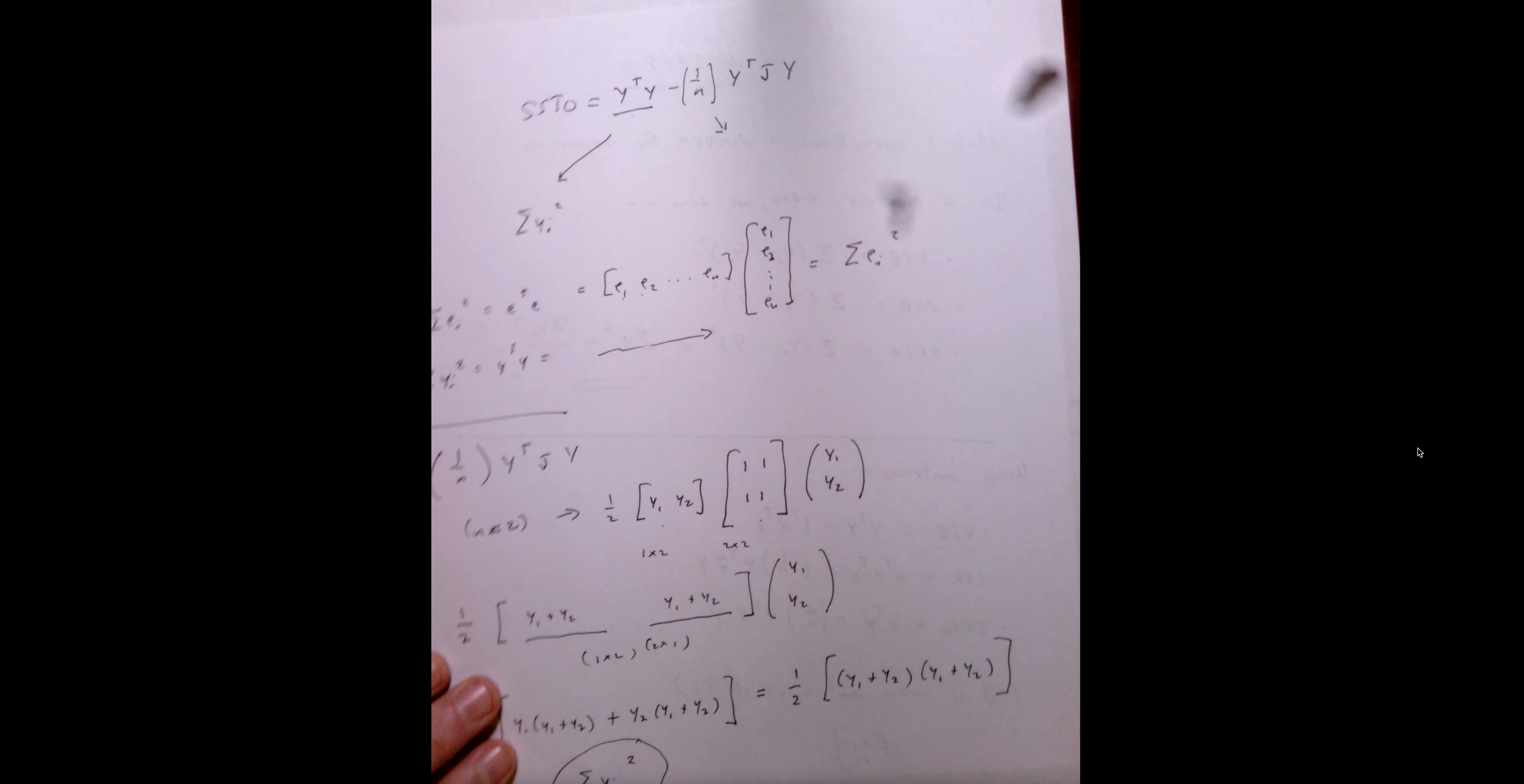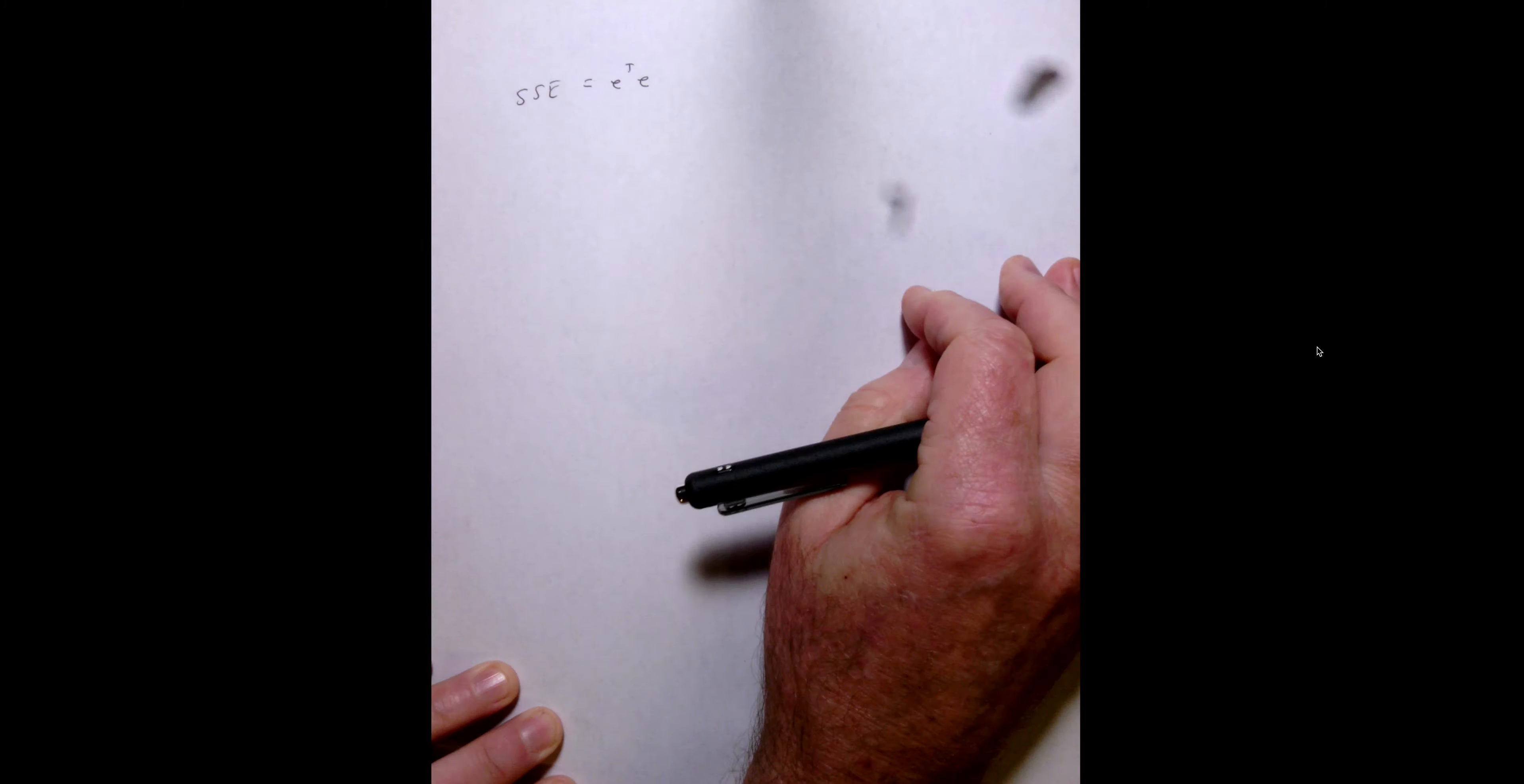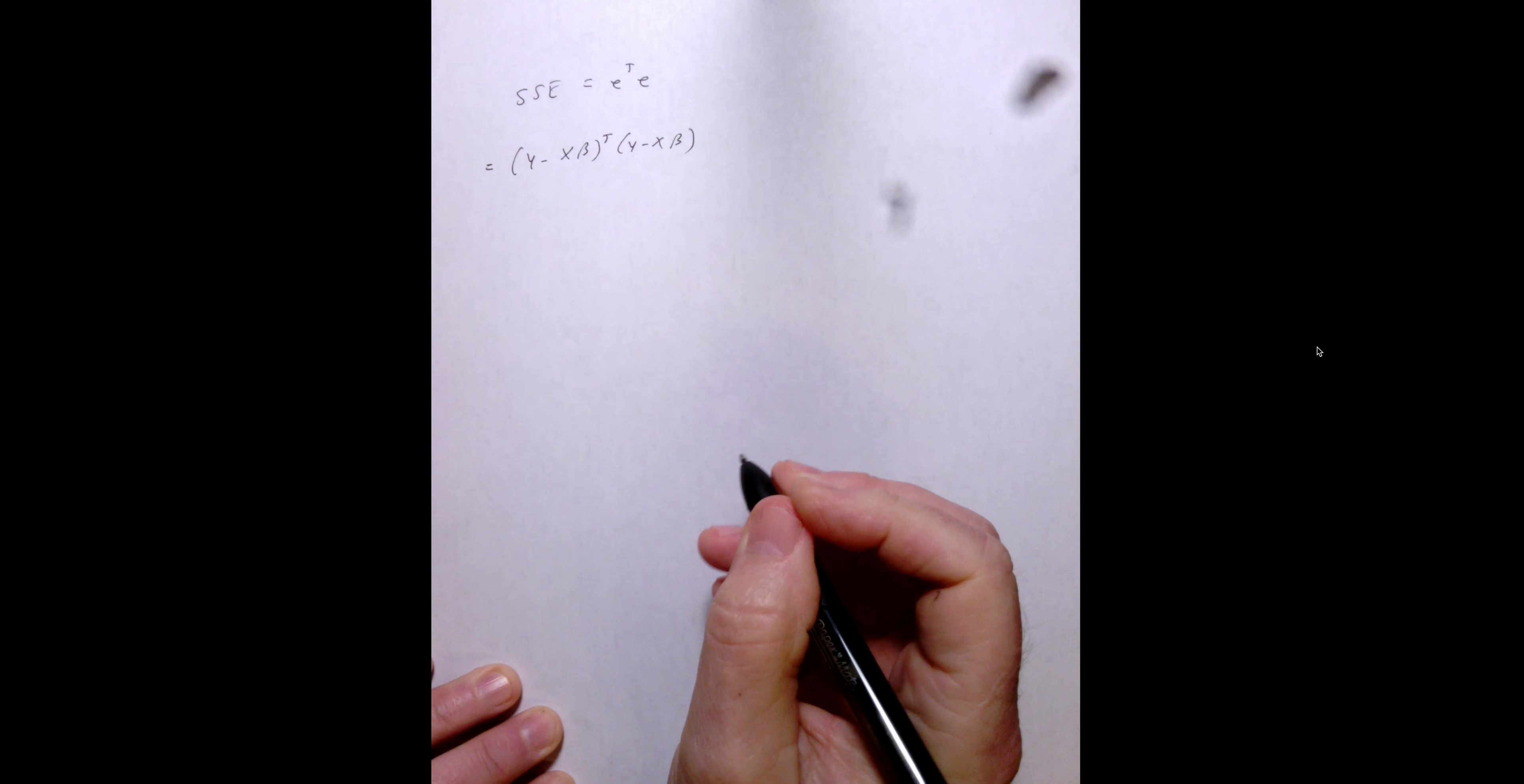So, that part's a pretty easy part to prove, as is the sum of squares error. The game plan in this video is to get a data set and calculate these, and we'll do that in just a second. So let's take a look at the sum of squares error, which we know is just e transpose times e, and we know that this is now y minus xb transpose times y minus xb.